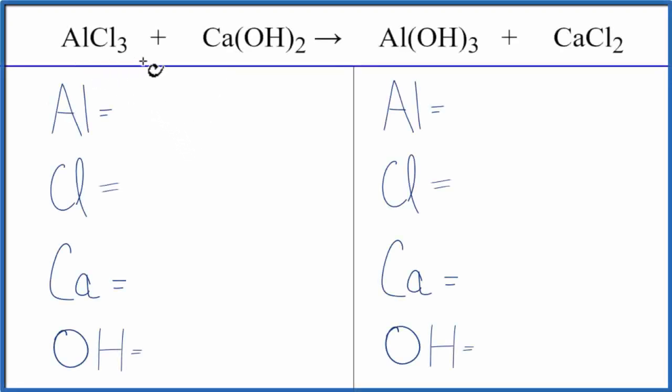To balance this equation, aluminum chloride plus calcium hydroxide, we'll count the atoms up. We have one aluminum, we have three chlorines, one calcium, and we're going to use a trick here since this is a double displacement reaction and we have